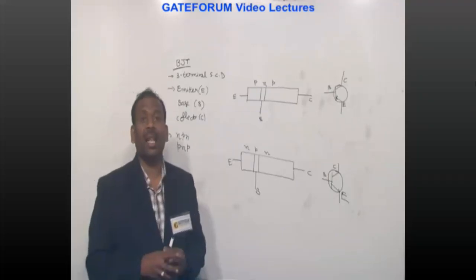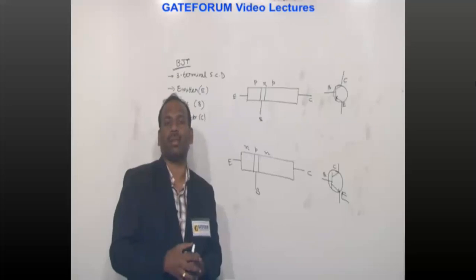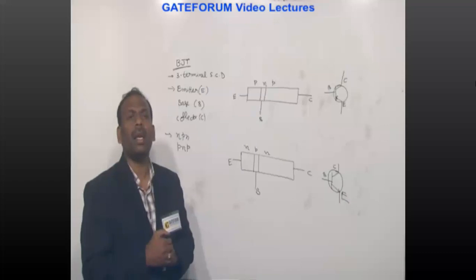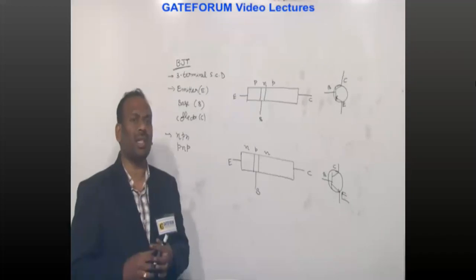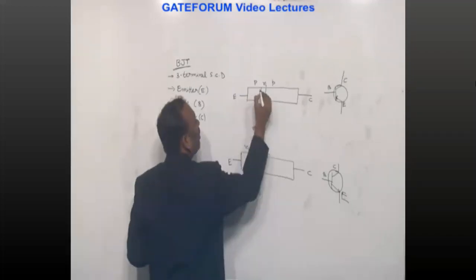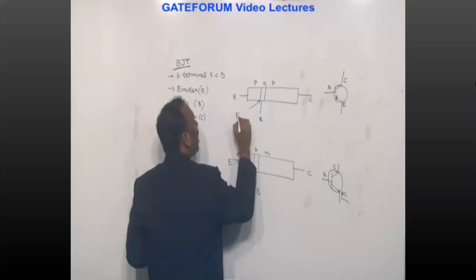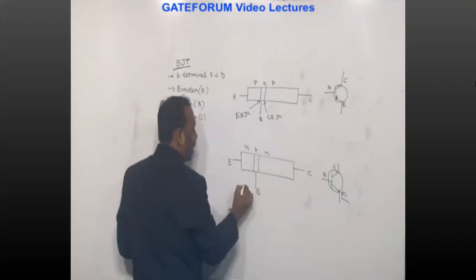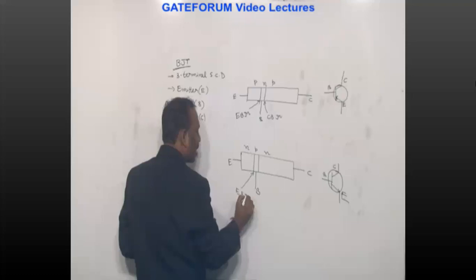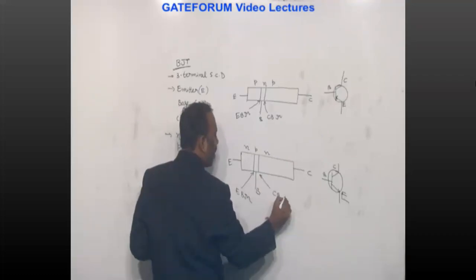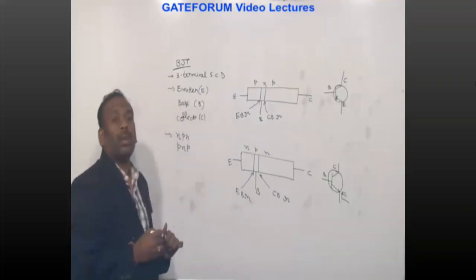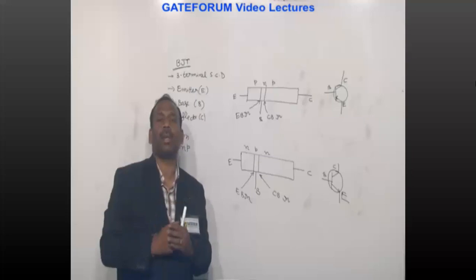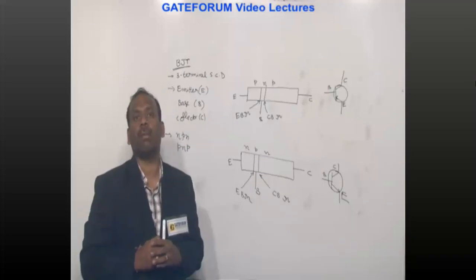The arrow mark indicates conventional current direction — the current direction when the emitter-base junction is forward biased. The emitter-base junction is between the emitter and base terminals, and the collector-base junction is between the collector and base terminals.